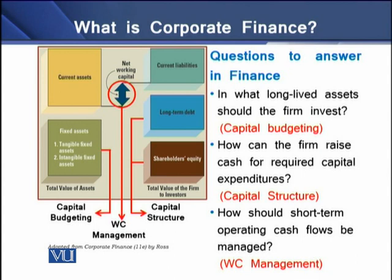Corporate finance looks to answer three different questions. The first is: what is the composition of assets? In this composition, we see the composition of fixed assets into tangible and intangible. Further, the composition talks about the mixture of tangible assets — what would be the proportion of property, plant, furniture, building, and other long-term assets. This composition of long-term assets depends upon the nature of the business, and this decision is commonly known as capital budgeting.